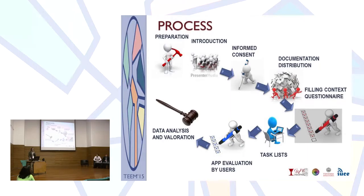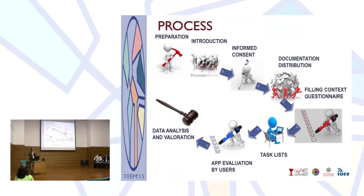After that, participants had to sign an informed consent. Although all data were collected anonymously, we took some pictures and recorded some parts of the session, so we needed their consent. After that, we distributed all the documentation: a filling context questionnaire where they explained how they used their mobile device, a task list of activities they had to perform with the app, and an evaluation questionnaire where they answered questions to validate the app. When they finished, we collected all the information and made the final evaluation.